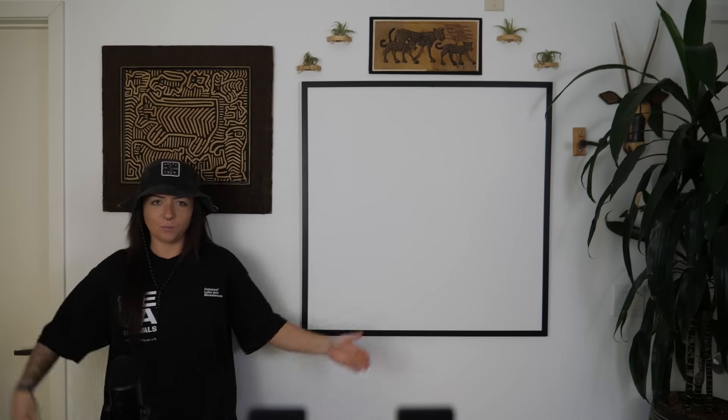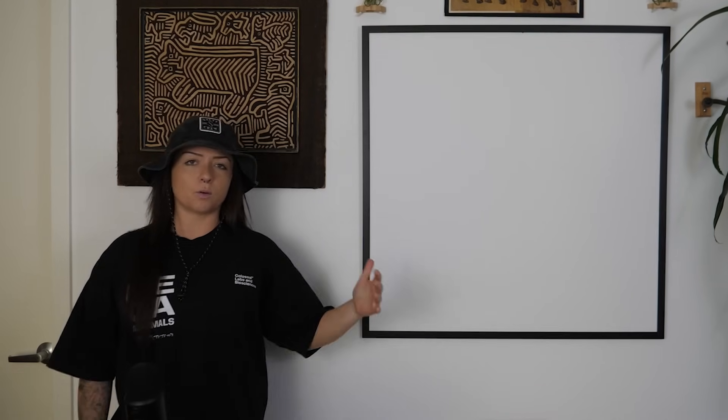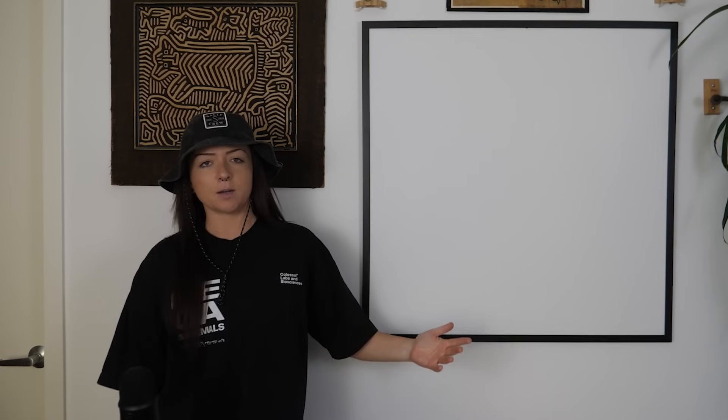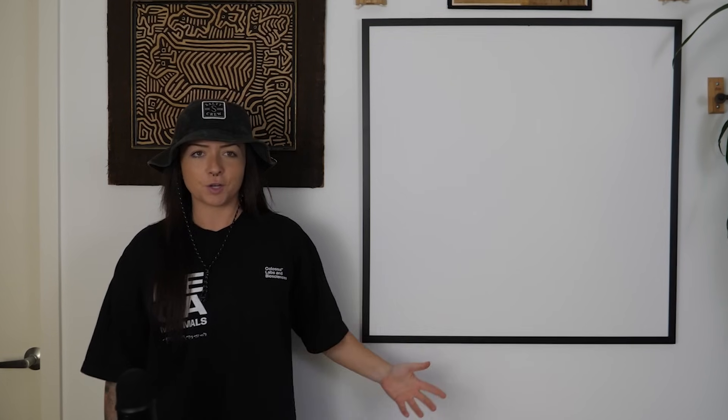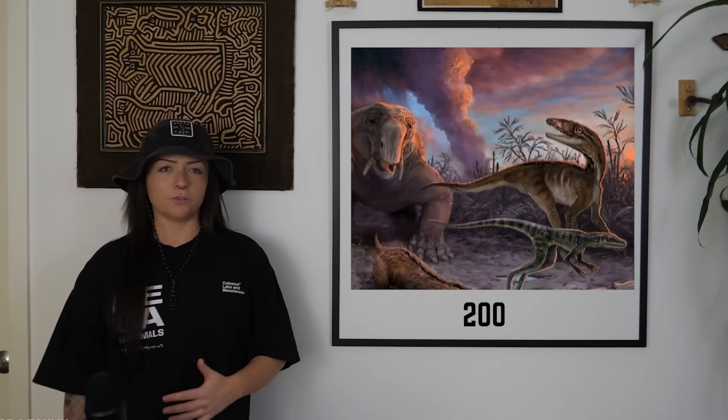We're back again with another mass extinction in the history of our planet. This time, one that arguably paved the way for the most iconic extinct animals in the minds of us humans — the Triassic extinction, which took place about 200 million years ago. While the players that were impacted are somewhat different from life we know today, studying mass extinctions like these allows us to learn how our world got the way it is now and where it's headed.